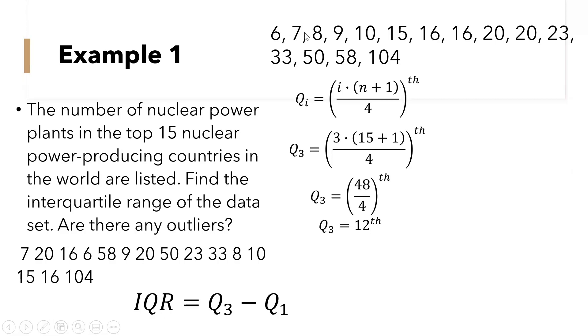So meaning quartile 3 is the 12th data. So let us count through the ordered data to the 12th position. So the 12th data is 33. Quartile 3 is 33.